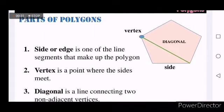We have different parts of polygons. The first is called the side or edge. It is one of the line segments that make up the polygon. In the figure on the upper right, you can see that there are five sides or edges.